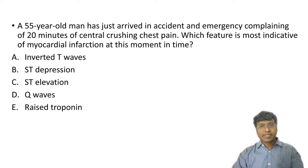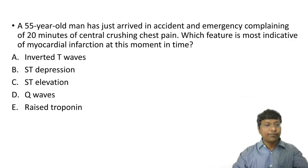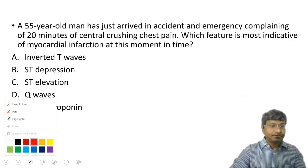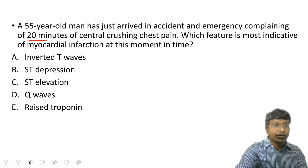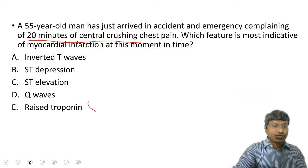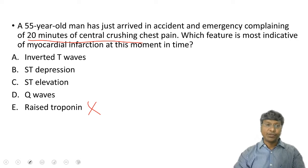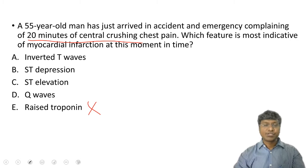But the question given here is, the individual has arrived into the accident and emergency department within 20 minutes of the onset of pain. Within 20 minutes of onset of central crushing chest pain. So your raised troponin is now ruled out, because that will get elevated in the blood within 2 to 4 hours.